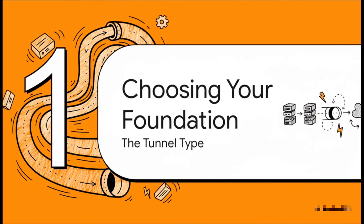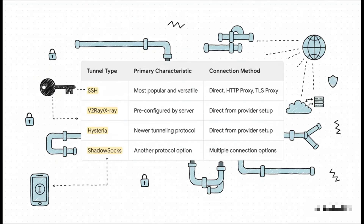First things first, we have to choose our foundation, which the app calls the tunnel type. And this is a big deal — probably the most important choice you'll make right at the start, because it basically defines how your entire connection is going to be built. You've got a few options here, and the tutorial points out some of the newer ones like V2Ray and Hysteria, but it strongly recommends sticking with SSH. It's just the most popular and flexible of the bunch, giving you a few different ways to connect. So for this explainer, we're definitely going to stick with SSH.